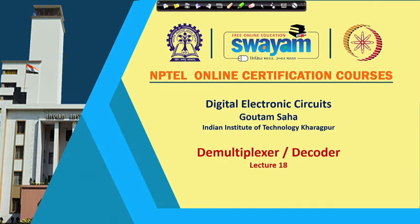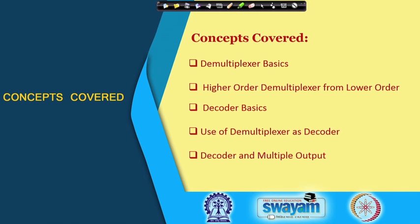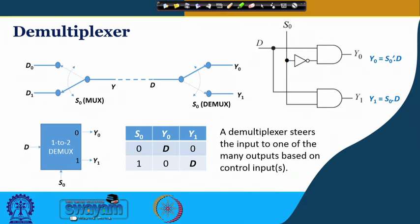Hello everybody. In the last two classes we discussed multiplexer, and in this class we shall look at demultiplexer, which is also uttered together with decoder, though functionally they are different, but the circuit for each of these is essentially the same.